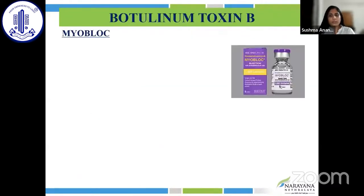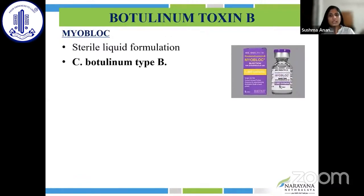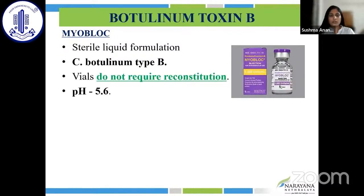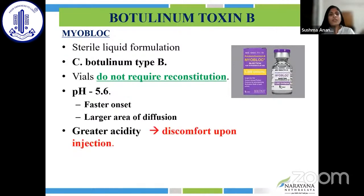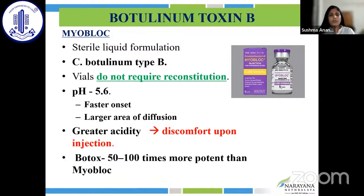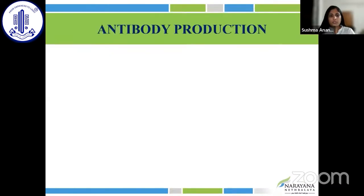Botulinum toxin type B, marketed as Myoblock, is a sterile liquid formulation expressed by Clostridium botulinum type B. The vials require no reconstitution as they come as a sterile liquid. The pH is 5.6, which is acidic, giving it a faster onset of action and diffusion over a large area. However, the greater acidity comes with the disadvantage of causing greater discomfort upon injection. Botox is 50 to 100 times more potent than Myoblock.